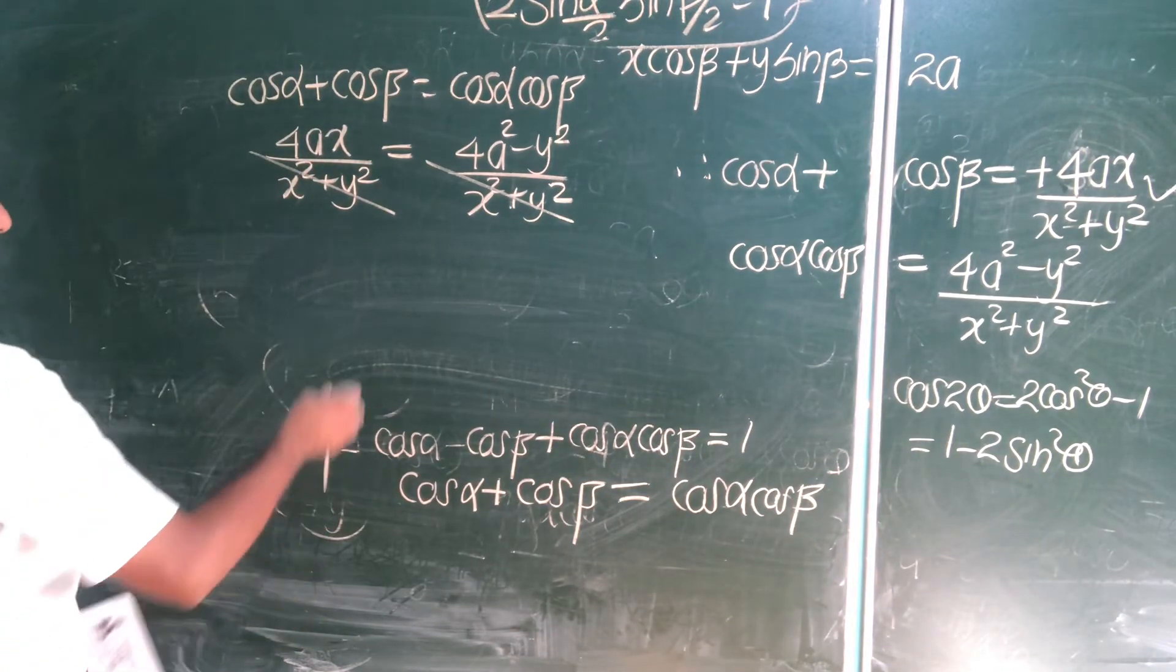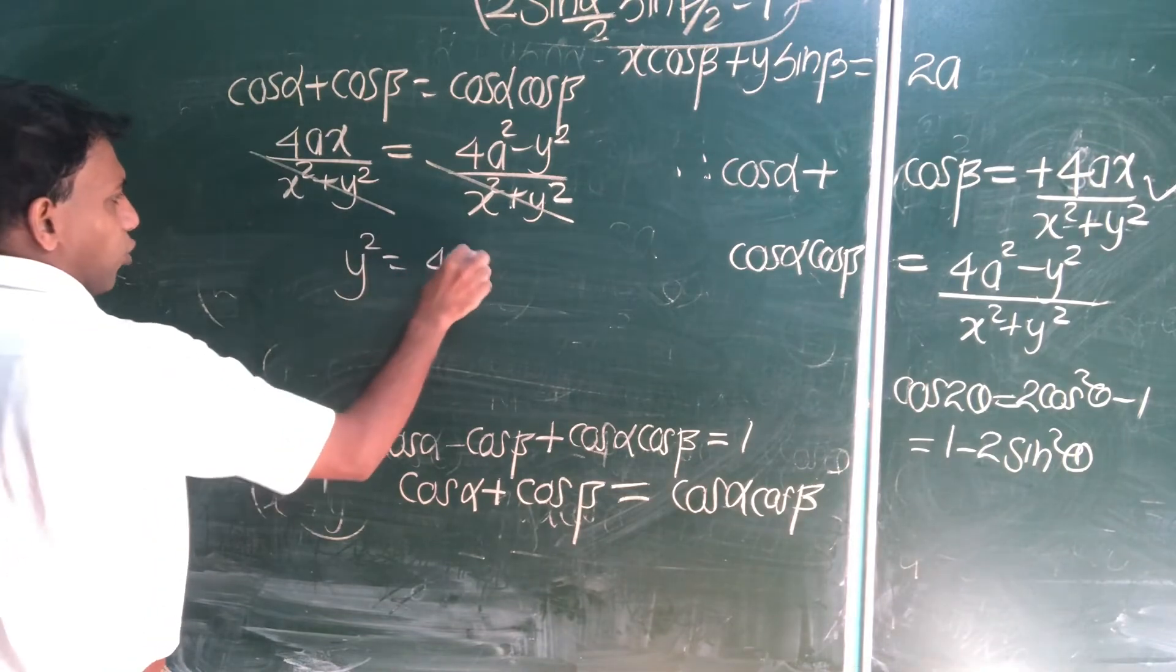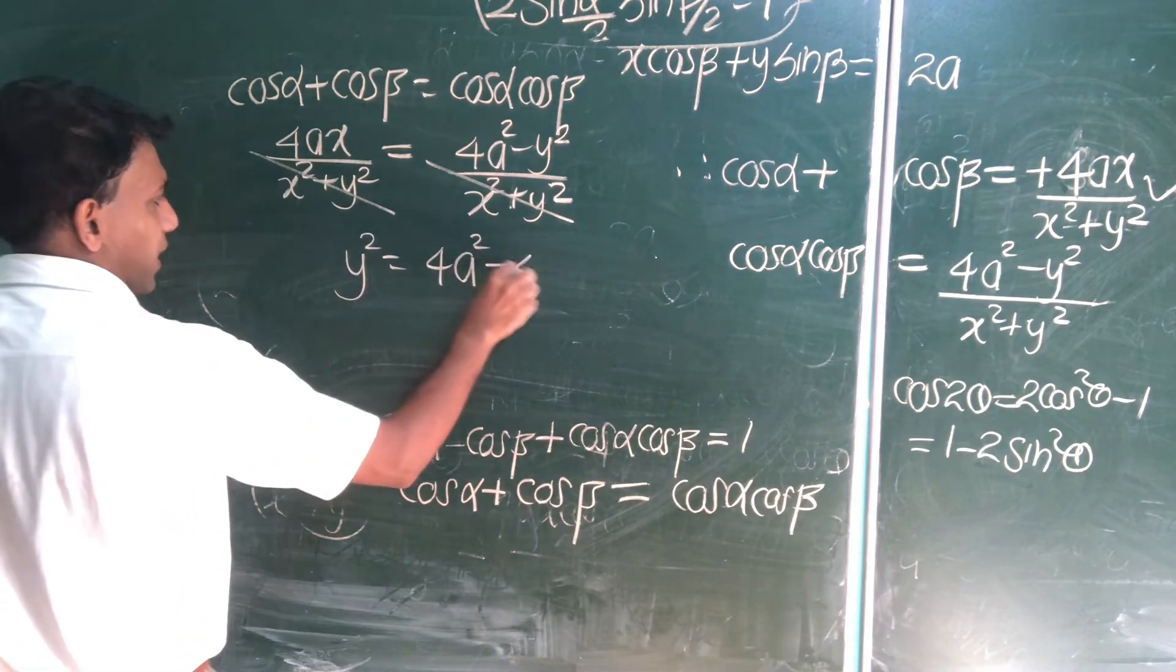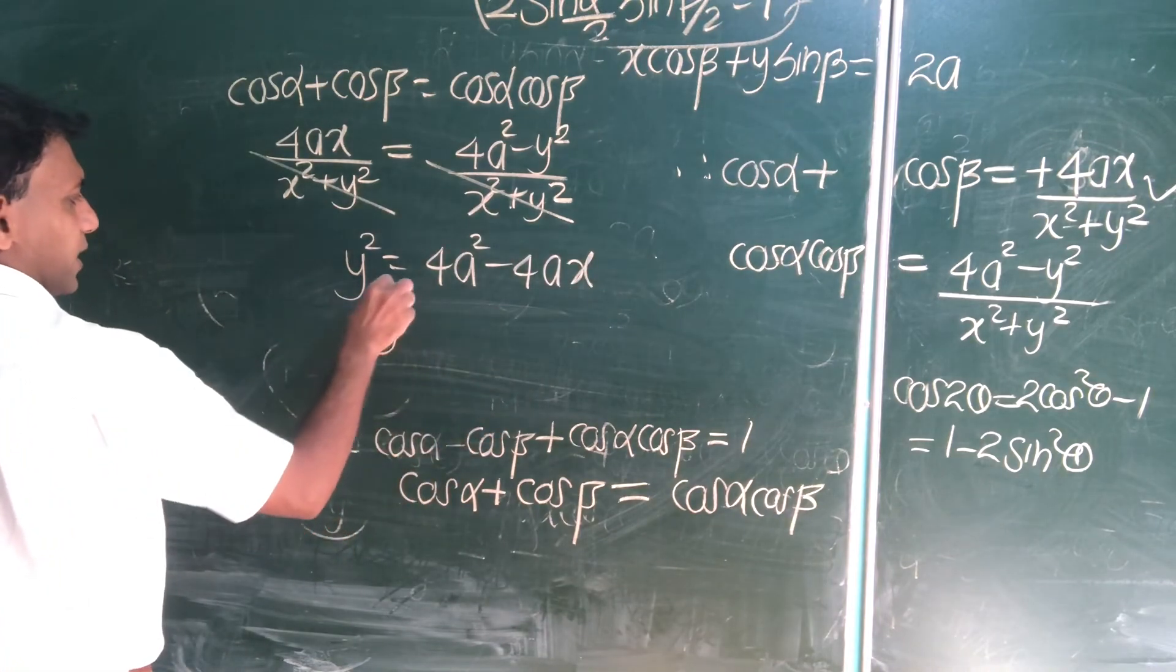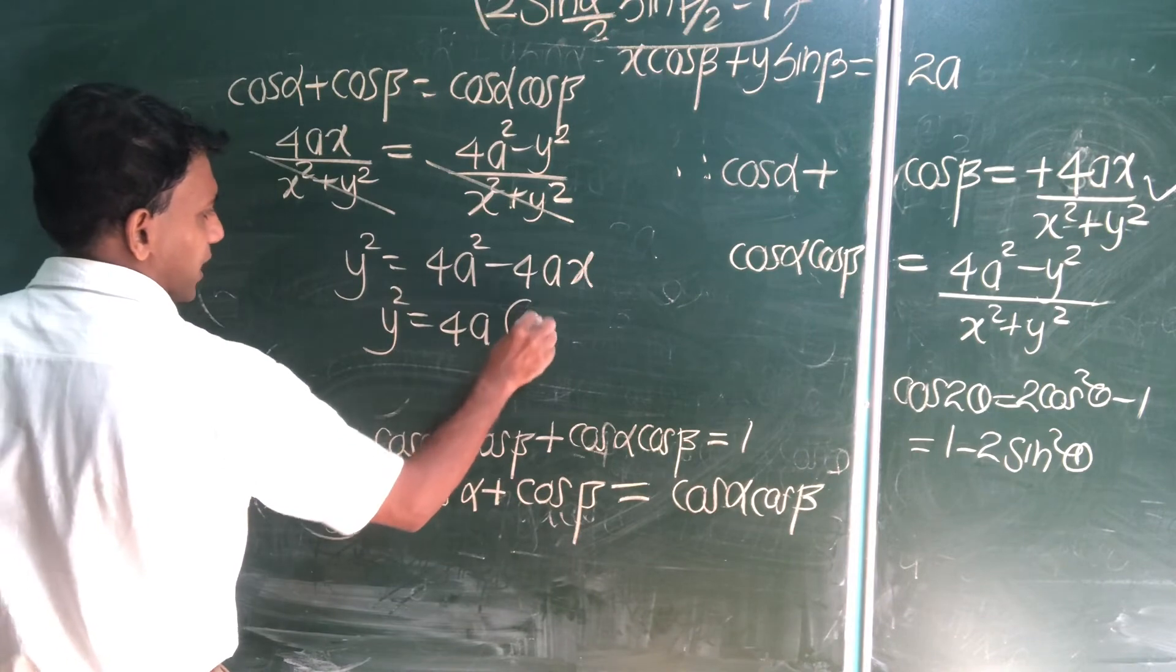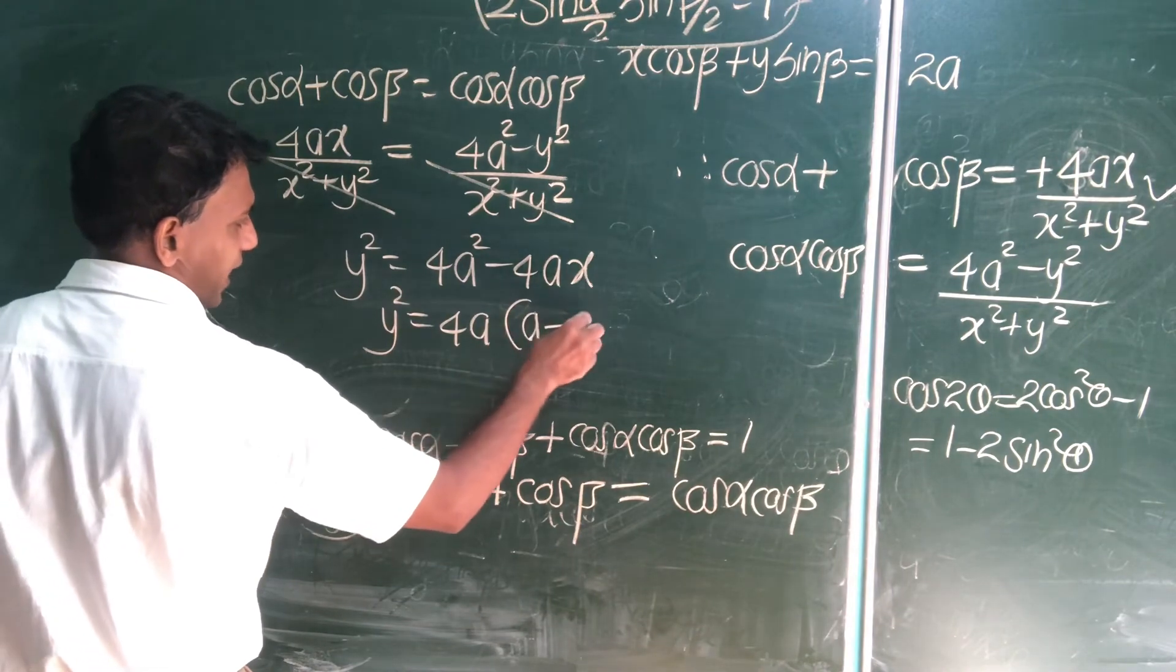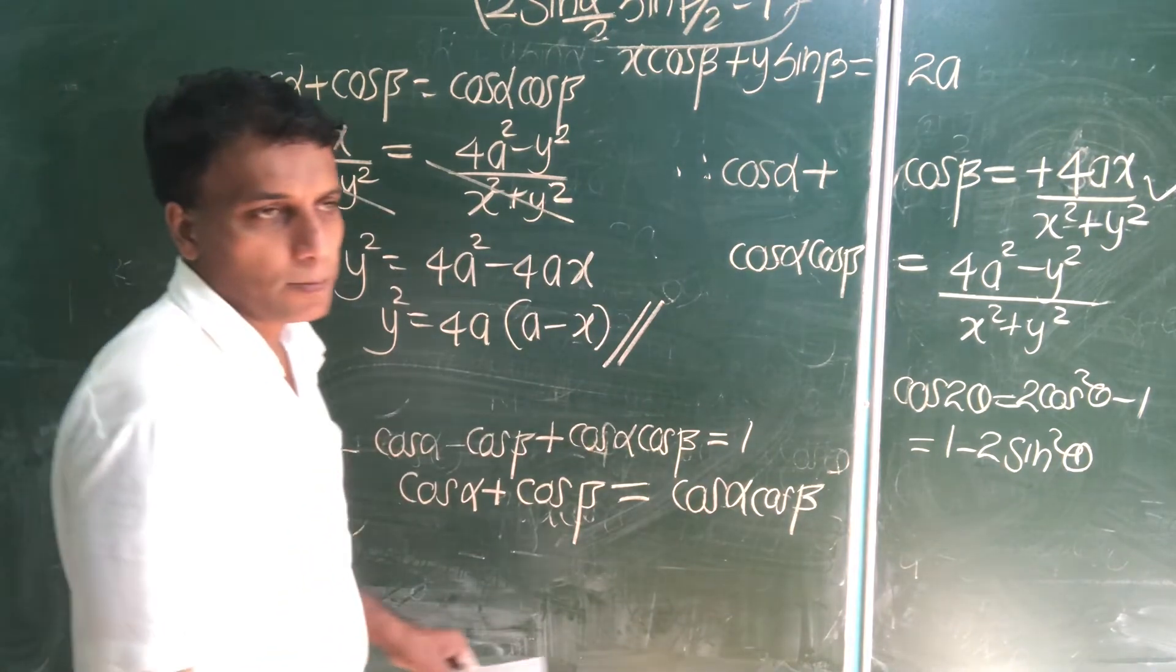So, what is the answer? Y square subjected. What is Y square equal 4A square minus 4AX? So, Y square equal, take the 4A out, then A minus X. So, interesting problem, useful.